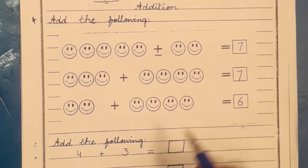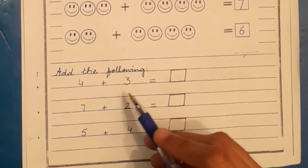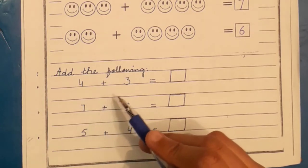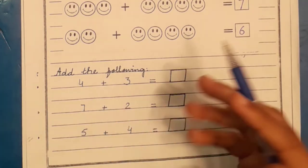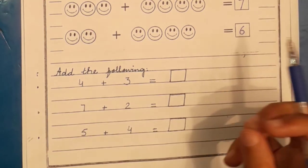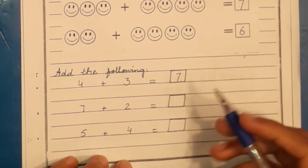Added smileys are there. Now we will add the numbers. Four plus three. Four, we have to add three. So we will add four to next three numbers. Five, six, seven. So we will add this answer to seven. Write.